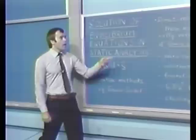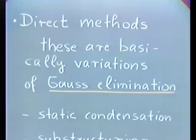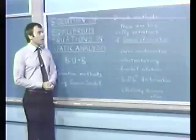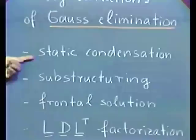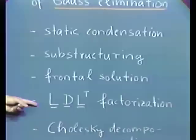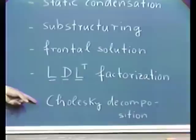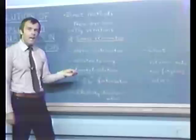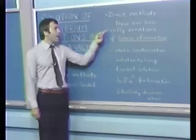Now, we use almost exclusively direct methods. All computer programs in abundant use in industry are basically using direct methods. These direct methods are essentially variations of Gauss elimination, a method that Gauss proposed some hundred years ago for the solution of equations. We are talking about static condensation, substructuring, frontal solution, LDL-transpose factorization, Cholesky decomposition, the Crout method, and the column reduction skyline solver. All of these methods are indeed variations of the basic Gauss elimination procedure, and they are direct methods because the number of operations can be counted for the solution of the equations.